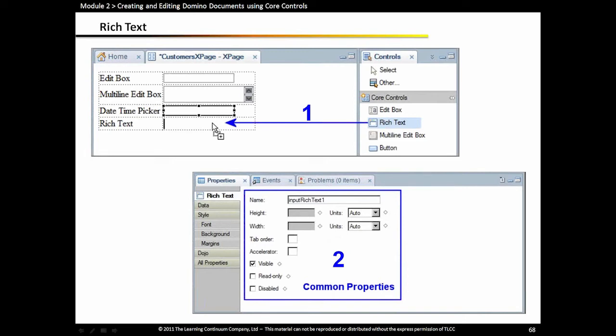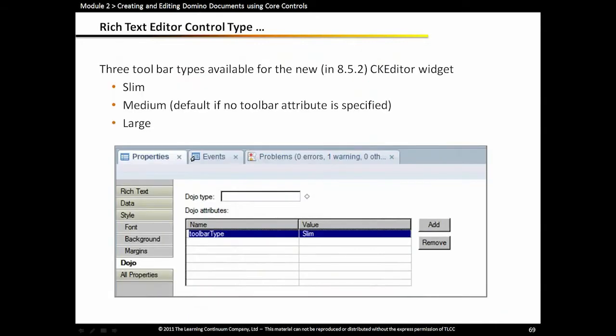The rich text control would be bound to a rich text field in your Domino form. This uses a CK editor dojo widget when it's displayed in the web browser in the Notes client. When you work with rich text editors on the web, you know they have a toolbar at the top that controls the various options the user can do. You can set whether you want a lot of options, a medium amount, or large, which would be all the options.